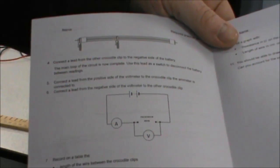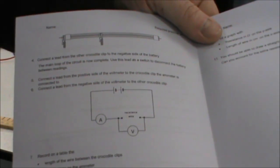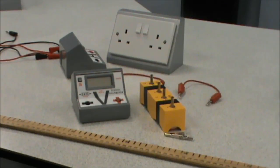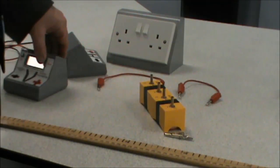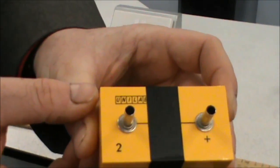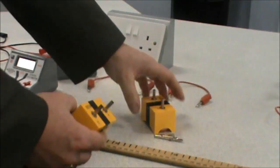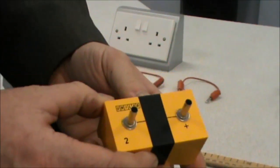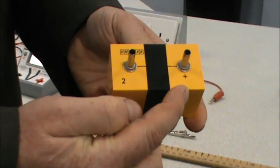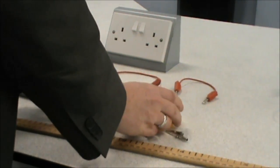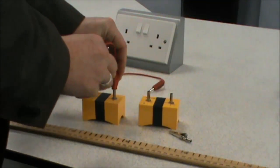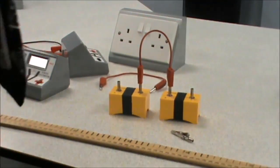We start off with setting up the circuit as detailed in the required practical notes. When building a circuit, always start at the power supply. In this case, we have two cells, the first of which you can see here, and the second here. You'll notice that they have the positive terminal marked. You're going to need to make sure that you connect them the same way round, so we connect positive to negative with our cells.